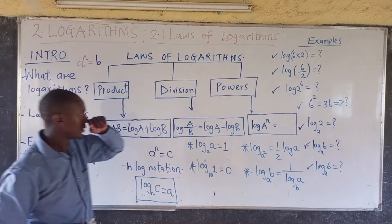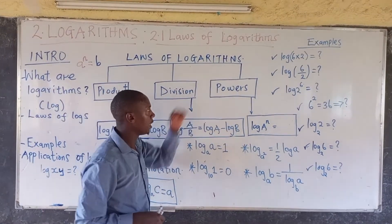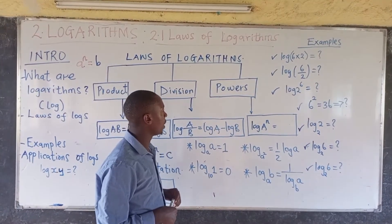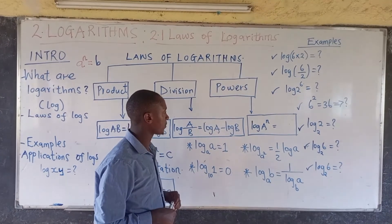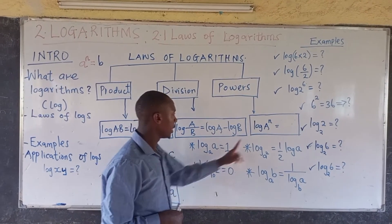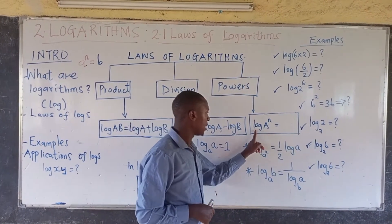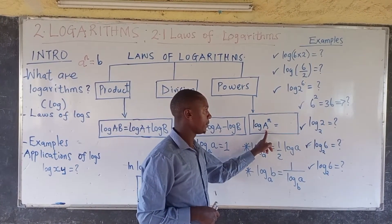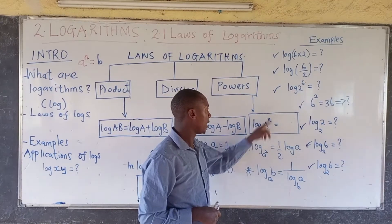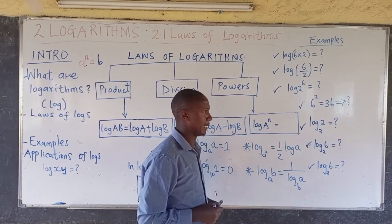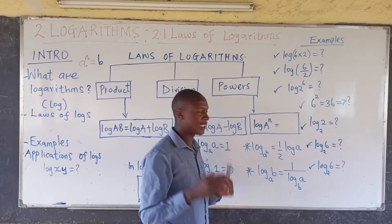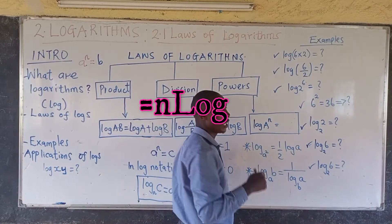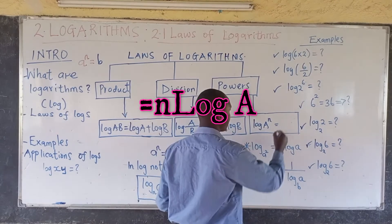In the third case, where we have powers of logarithms: if you are given log of A to the power N, the result is going to be N times log of A.